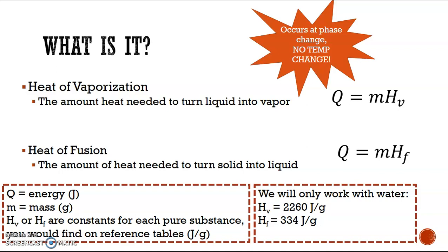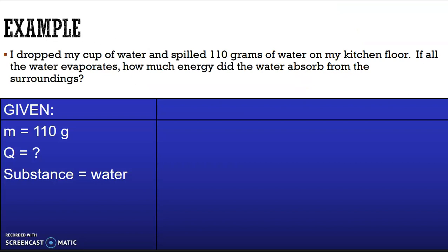We're only focusing on water in our class, so let's take a look at this example problem. I dropped a cup of water and spilled it all over my kitchen floor. I spilled a total of 110 grams of water. If all the water evaporates, how much energy did the water absorb from the surroundings? So let's take a look at what I've got. I've got my mass of water is 110 grams. I want to know how much energy was absorbed, so that's my Q is my unknown. And I know that my substance is water. And for our purposes, our substance is always going to be water.